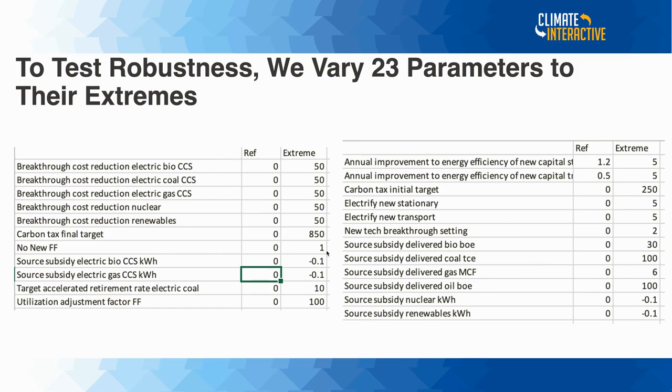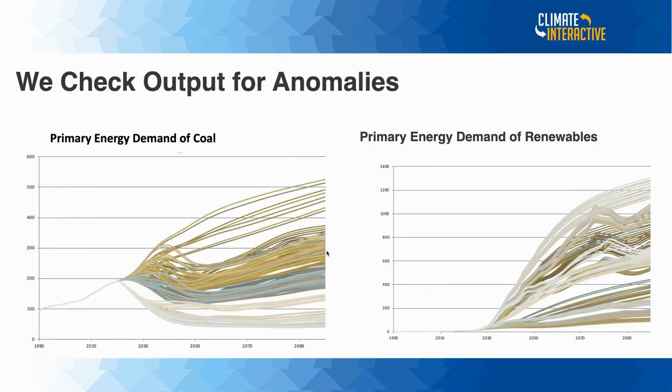That produced over 6,000 scenarios. We then viewed all of those scenarios for critical graphs — in this case, coal and renewables — and checked: are there any anomalies? Not just looking for one anomaly, but across many of these scenarios, can we see any behavior that just doesn't make sense? That's what we mean by extreme conditions tests in a more automated way. Hope that was helpful.